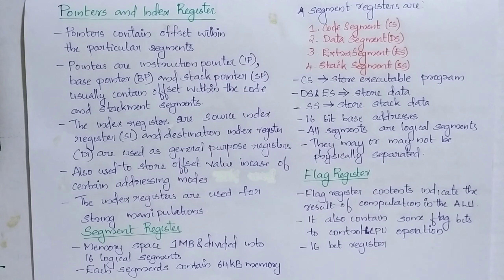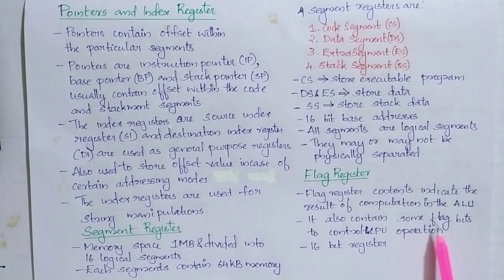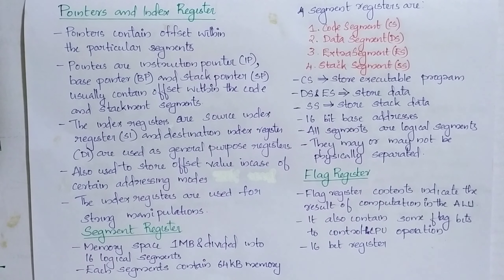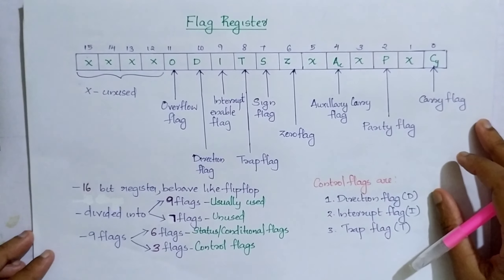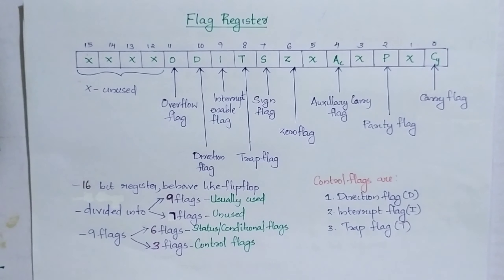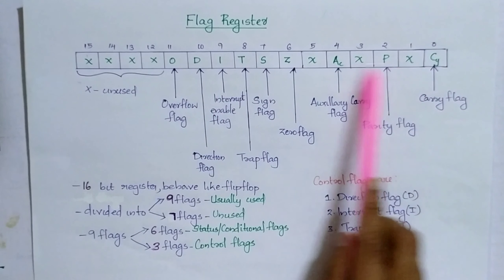The fourth category is the flag register. Flag register contents indicate the result of computation in the ALU, and it also contains flag bits to control the CPU operation. It is a 16-bit register. Looking at the diagram, we can see it has 16 bits, and we can check how many are unused.